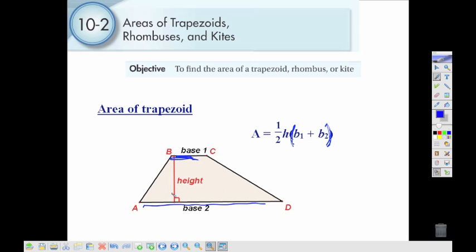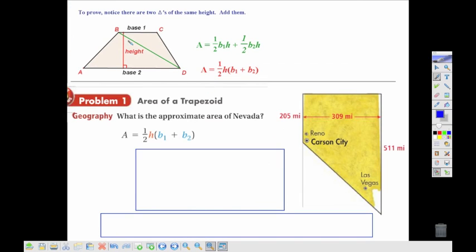So the parallel sides get added together. Our height has to be perpendicular related to each of those bases. Now this works because if you take any trapezoid and cut it this way so that you end up with the two triangles...